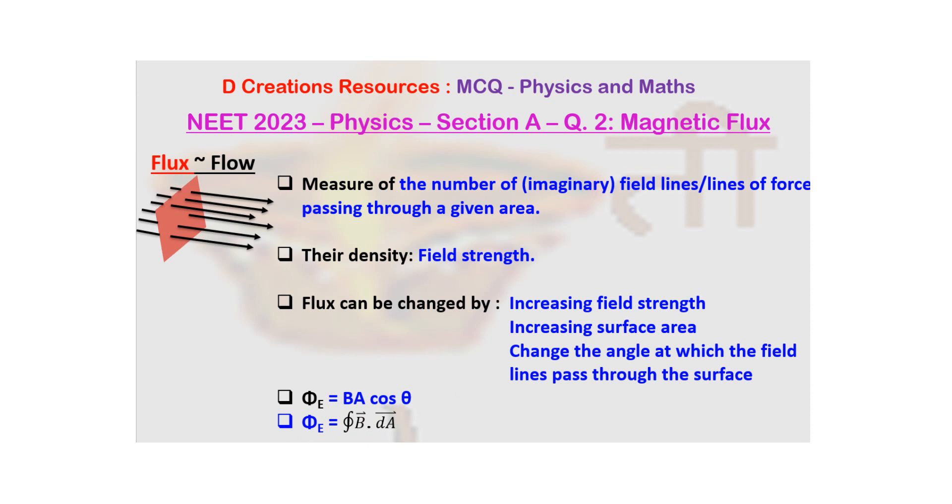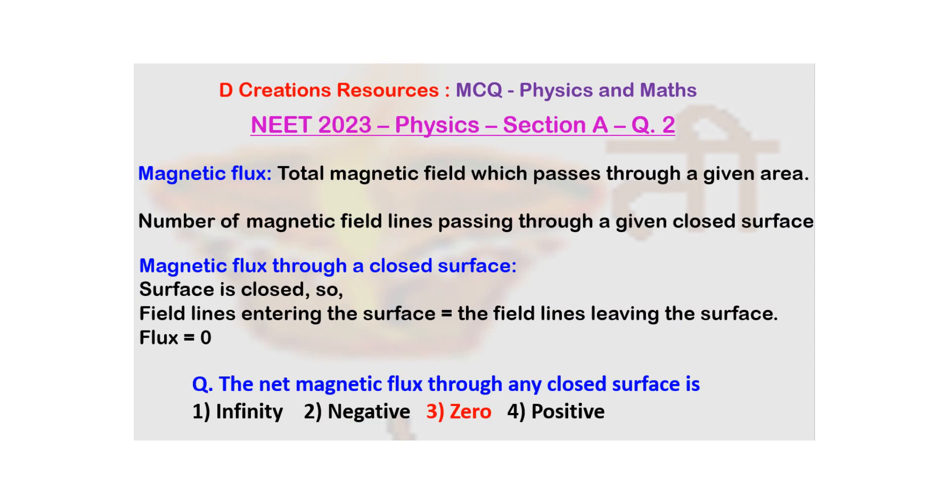Now when you are saying closed integral, so basically, the idea is since the surface is closed, that means all the field lines which are entering the surface are coming back to the surface. Or in other words, field lines entering the surface is equal to the field lines leaving the surface. So when this happens, obviously, flux is 0.